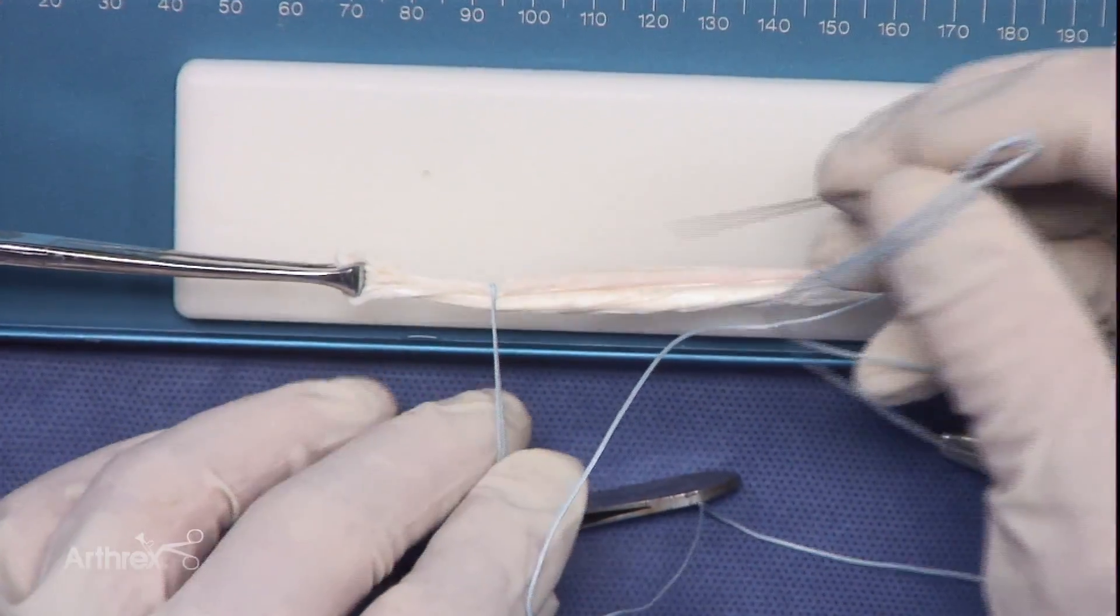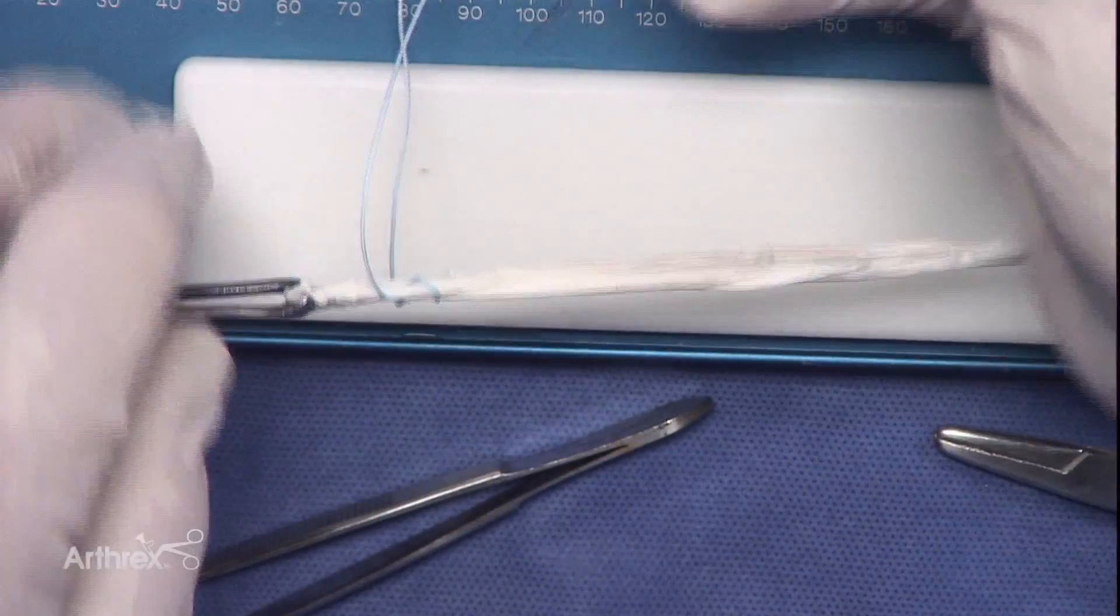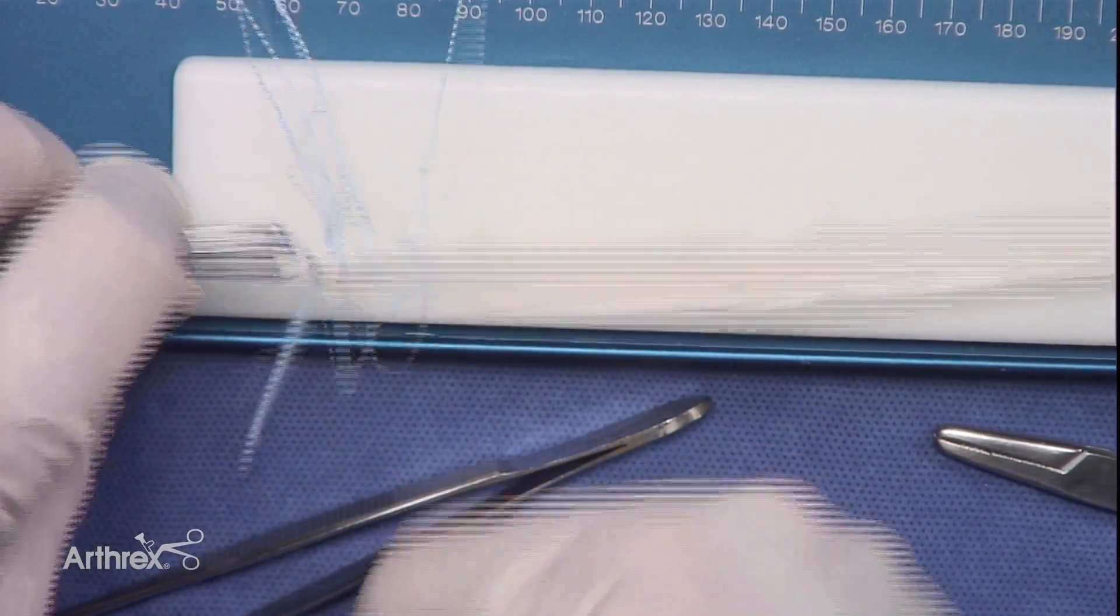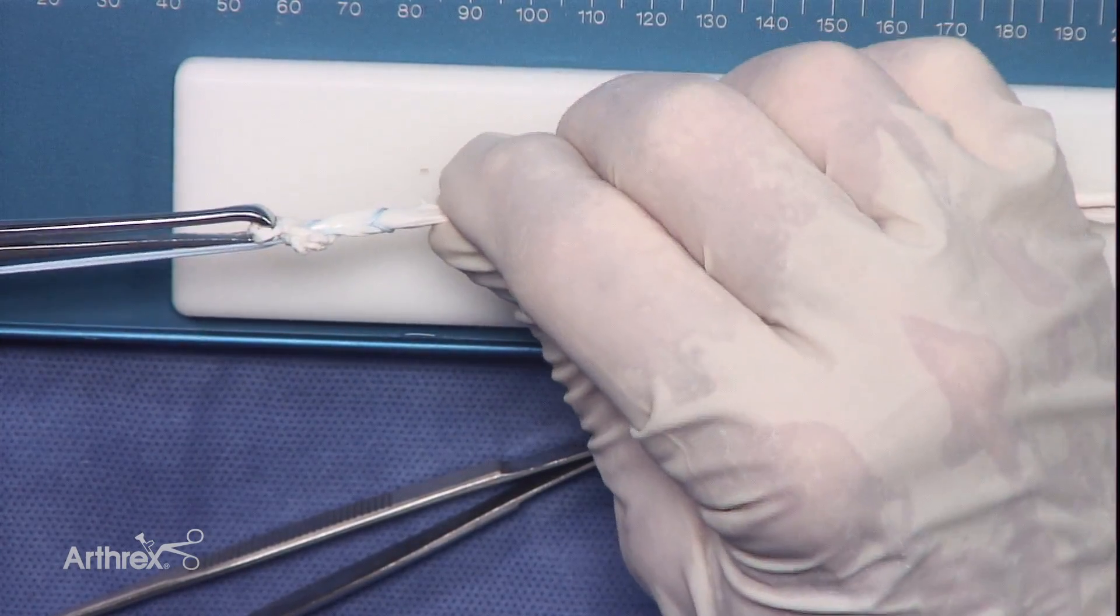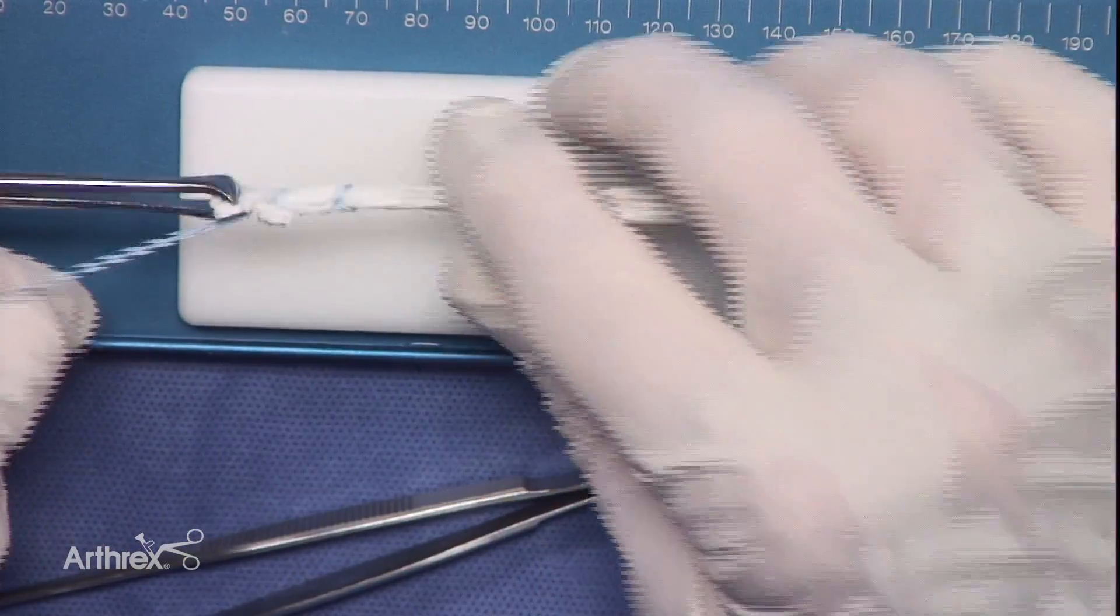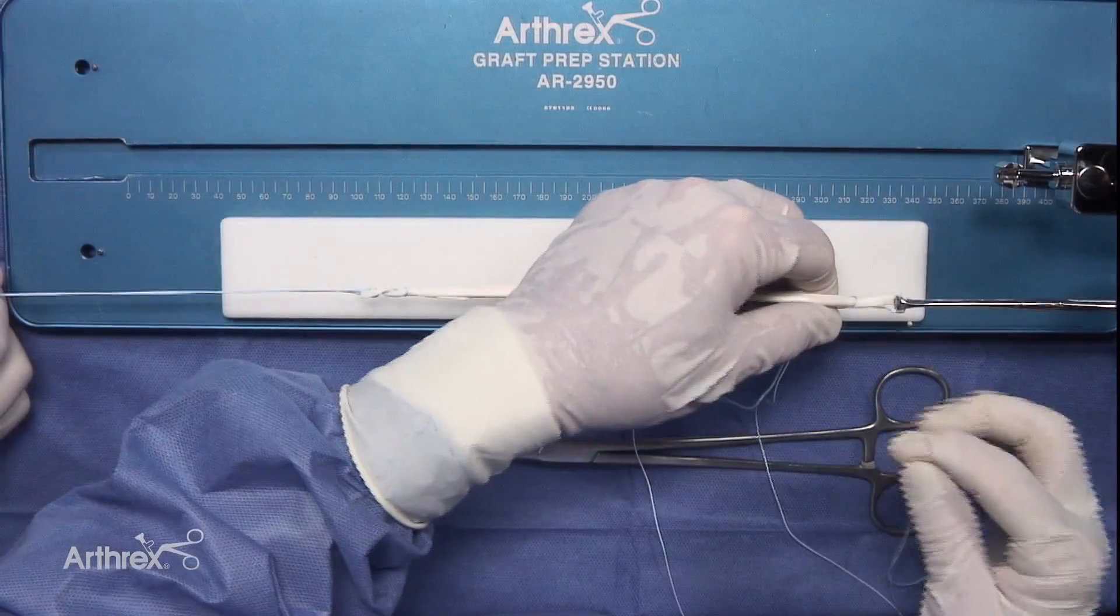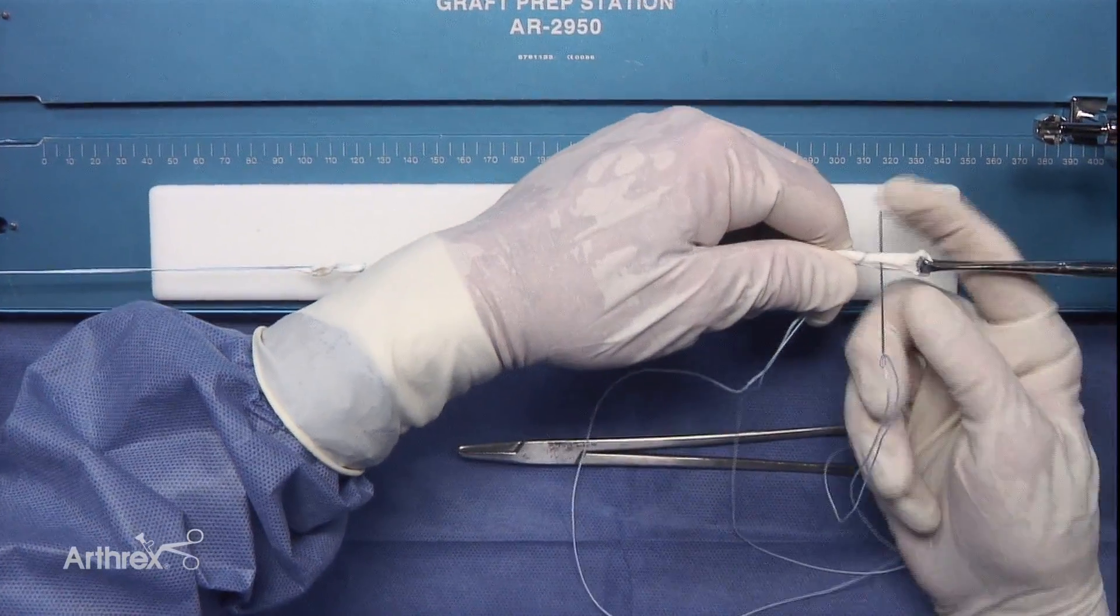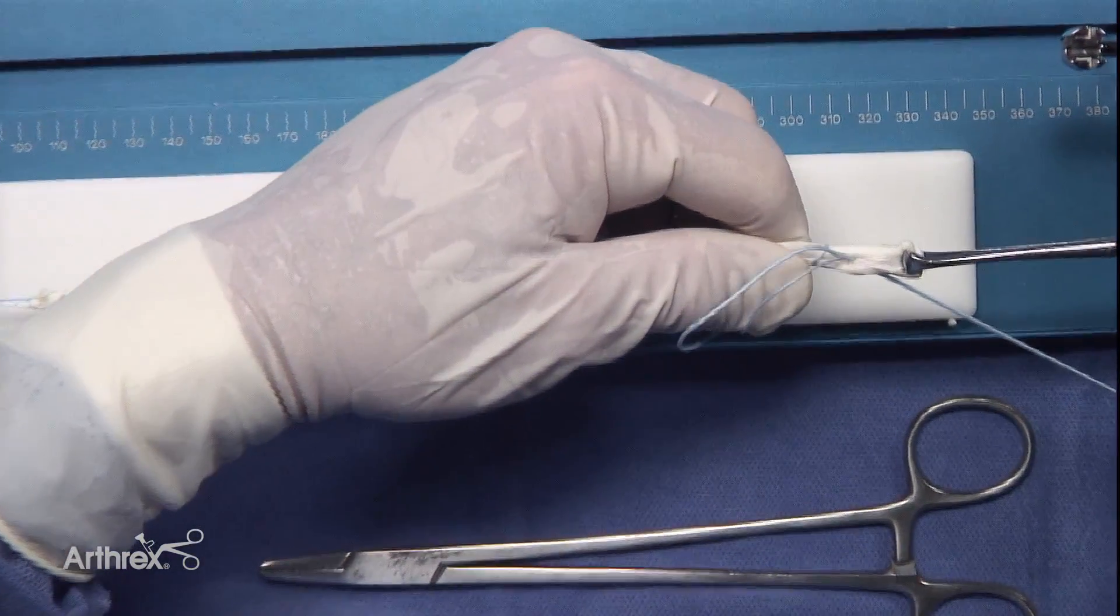We have a fiber loop suture approximately 25 millimeters from the end. We're going to pass the fiber loop one more time, and just grab the end of the graft. Those are two very simple fiber loop sutures that stabilize the end. We're passing the second fiber loop through the end, and this is a number two, and certainly for smaller tendons you can consider a zero fiber loop.